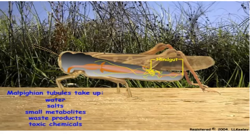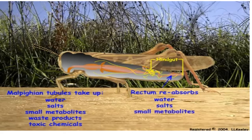Undigested food from the midgut, along with the Malpighian tubule urine, are passed into the hindgut. Special cells in the rectum selectively reabsorb the water, salts, and small metabolites, and the remaining waste products are excreted.